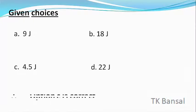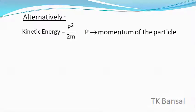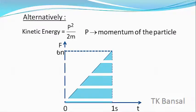Alternatively, we know that kinetic energy KE equals P square divided by twice M where P is the momentum of the particle. And the momentum of the particle can be found by area under the force versus time graph as shown in the figure.